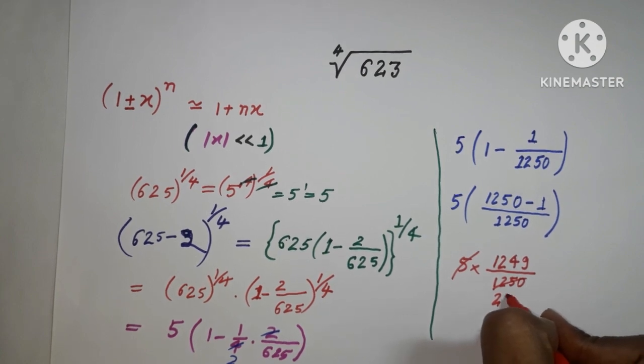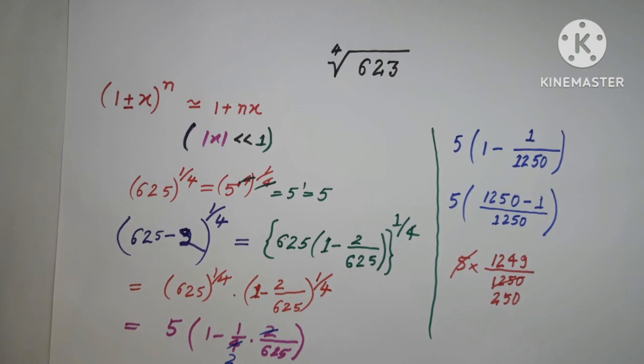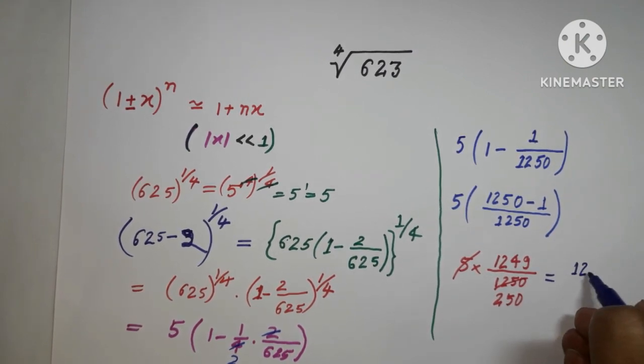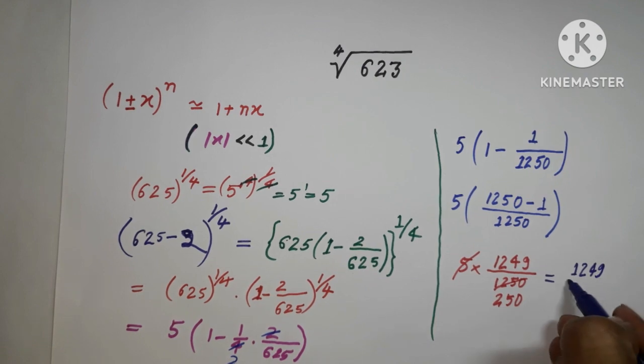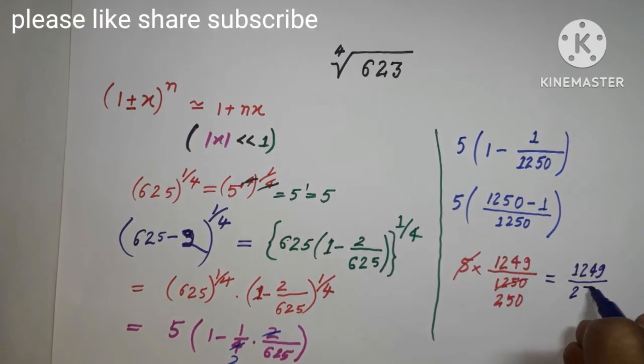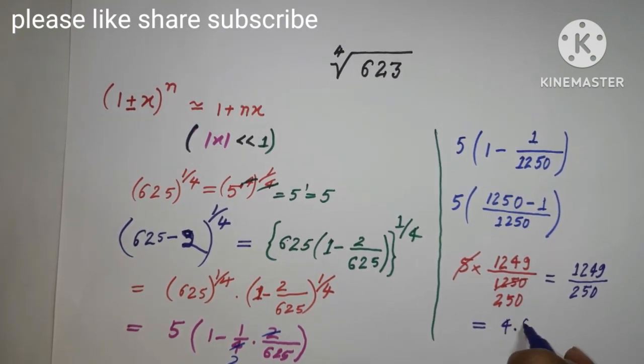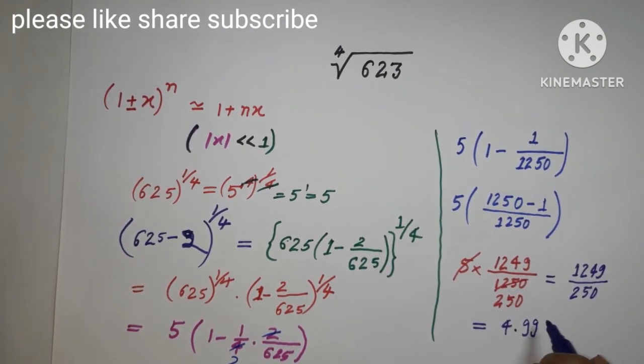We have 1249 divided by 250. After dividing, we get 4.996. So the fourth root of 623 is 4.996.